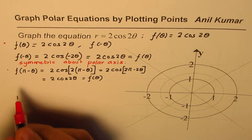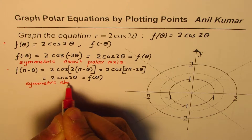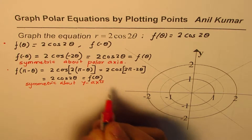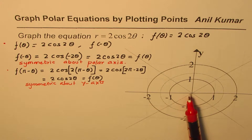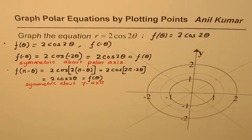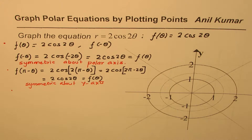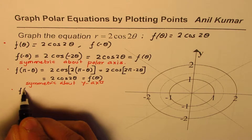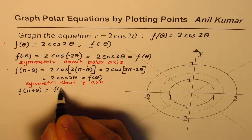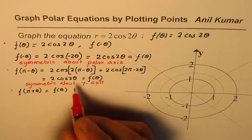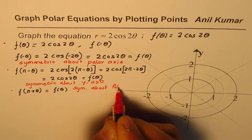So the function has both symmetries — about the polar axis and about the y-axis. If a function has both symmetries, it also has symmetry about the pole (origin). You can verify this by checking that f(π + θ) = f(θ), which also holds here.